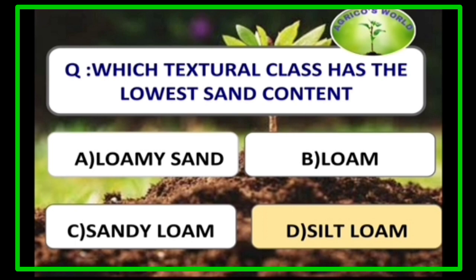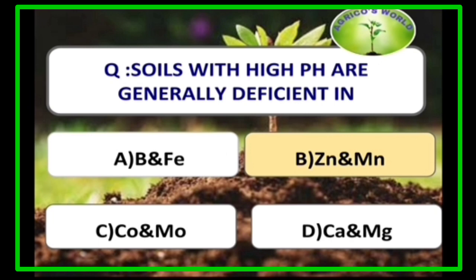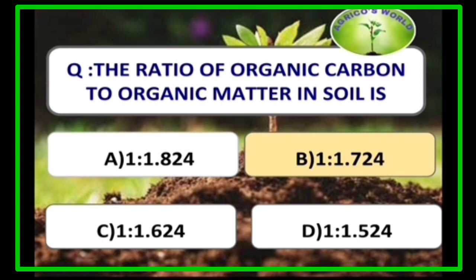Silty loam is the textural class that has the lowest sand content. Soils with high pH are generally deficient in zinc and manganese. The ratio of organic carbon to organic matter in soil is 1:1.724.